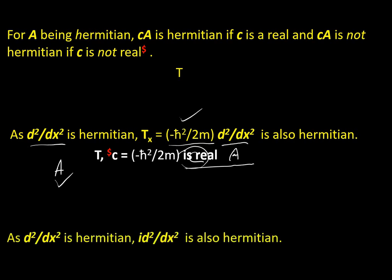d²/dx² is Hermitian — is i·d²/dx² also Hermitian? This is false because here c = i, which is not real. So i·d²/dx² is not Hermitian. That is a false statement.